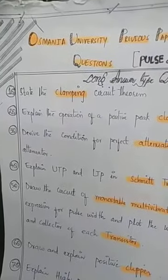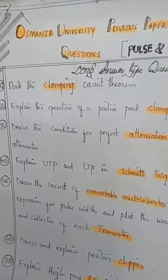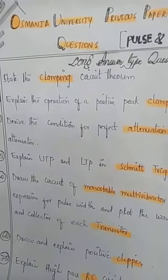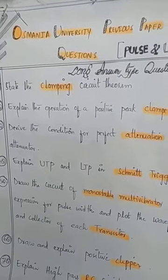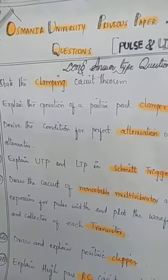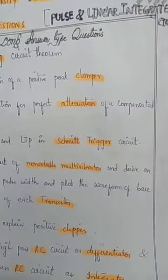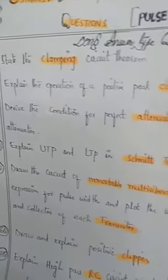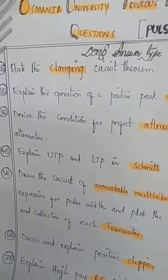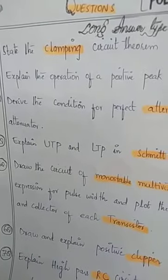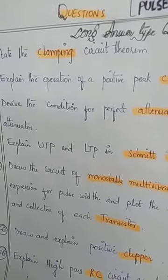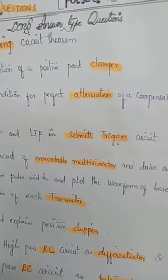The next question is: derive the condition for perfect attenuation of the compensated attenuator. We have done one problem using series and parallel RC circuitry. You had that in your classwork notes, so you can write down the condition for perfect attenuation.